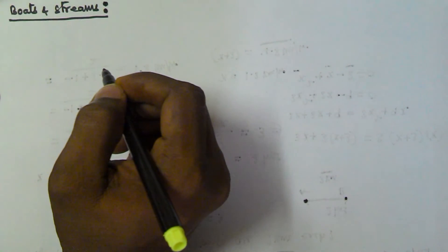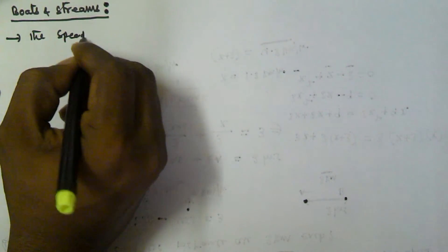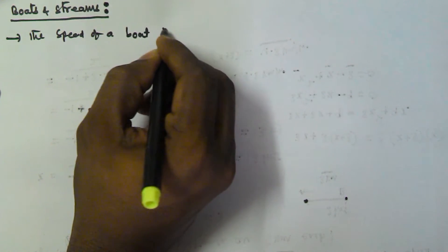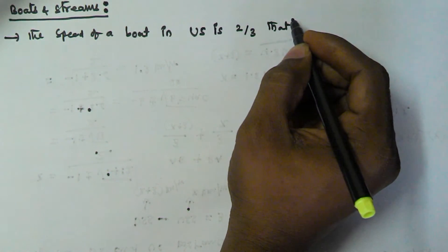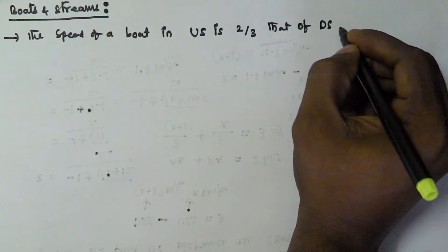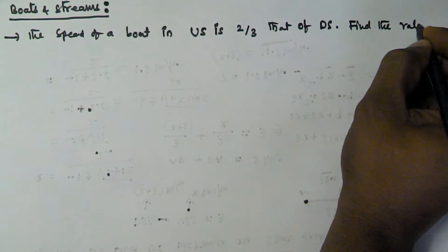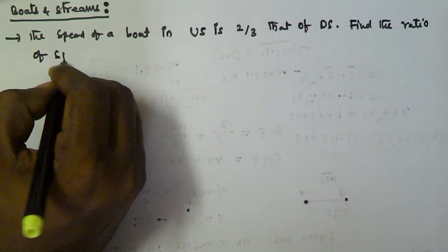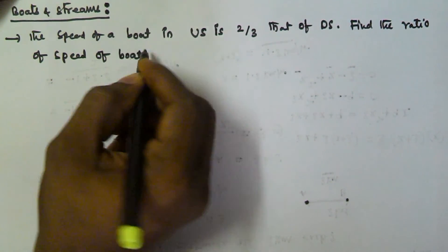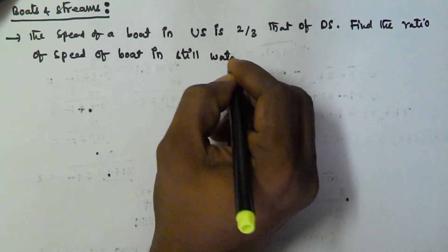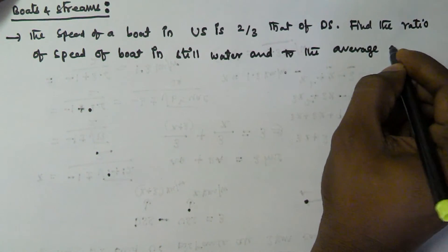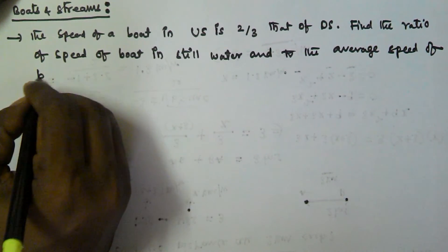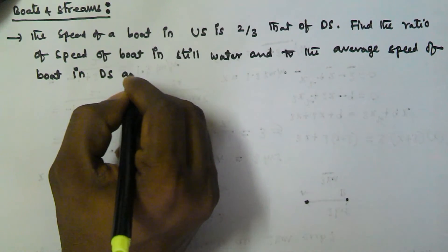Hello friends, in this video we will see another problem related to boats and streams. The problem is: the speed of a boat in upstream is 2/3 that of downstream. Find the ratio of the speed of the boat in still water to the average speed of the boat in downstream and upstream.